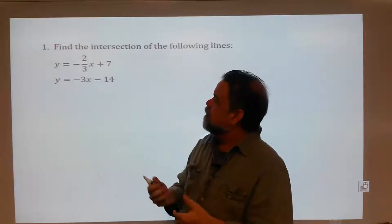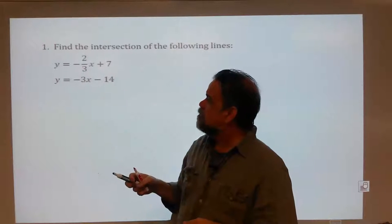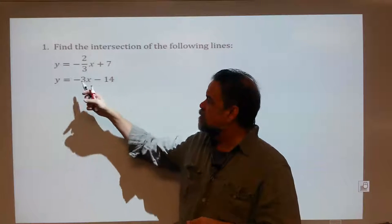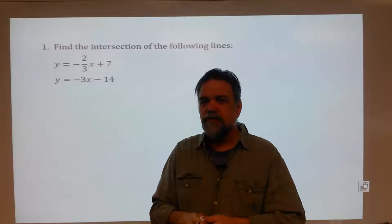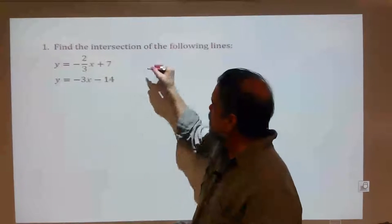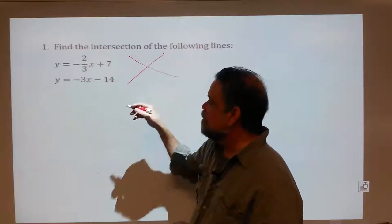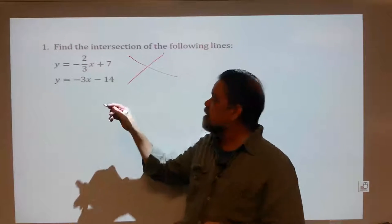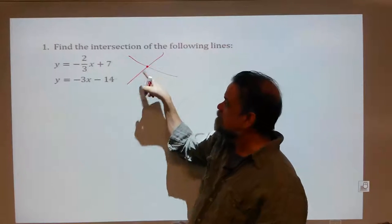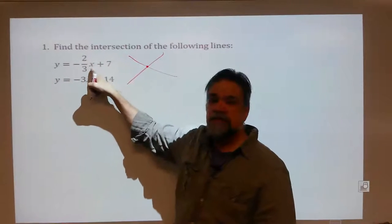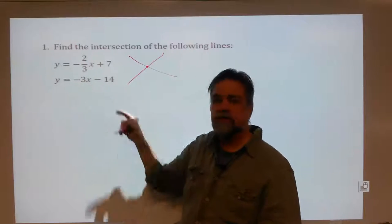Here's our first problem. We have the intersection of these two lines: y equals negative two-thirds x plus seven, and y equals negative three x minus fourteen. We're looking for the one point — here's one line, here's another line — we're looking for the one point that is the intersection of those two lines, where the y-coordinate is negative two-thirds times the x-coordinate plus seven, and the y-coordinate is also negative three x minus fourteen.